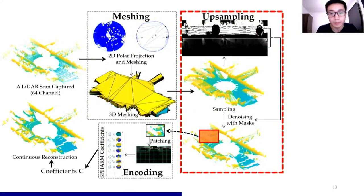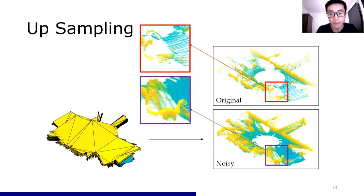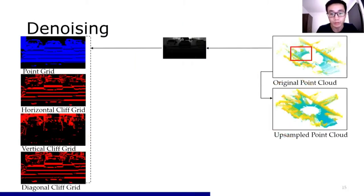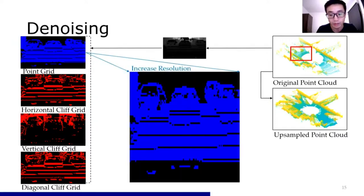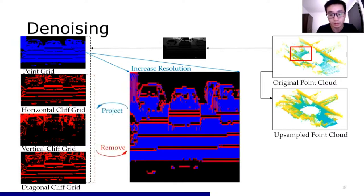The next steps are upsampling and denoising. After upsampling the mesh directly, there are lots of spurious points. To remove them, we use the depth image of the original point cloud to generate two kinds of binary masks: the first is a point grid representing the occupancy pixel of the depth image; the second masks are for cliff detection, removing wrongly-sampled points between sharp gaps in three different directions. We increase the resolution of the point grid to match the upsampled output, then project back to cliff detection masks to correct the point grid mask.